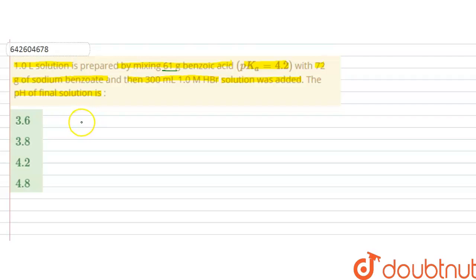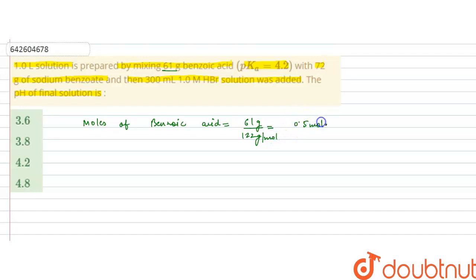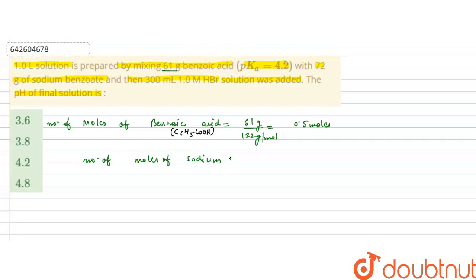First, we will calculate the moles of benzoic acid. Number of moles = given weight / molecular weight. Given weight is 61 grams and molecular weight of benzoic acid is 122 g/mol, so this gives us 0.5 moles of benzoic acid. Similarly, moles of sodium benzoate = 72 grams / 144 g/mol = 0.5 moles.